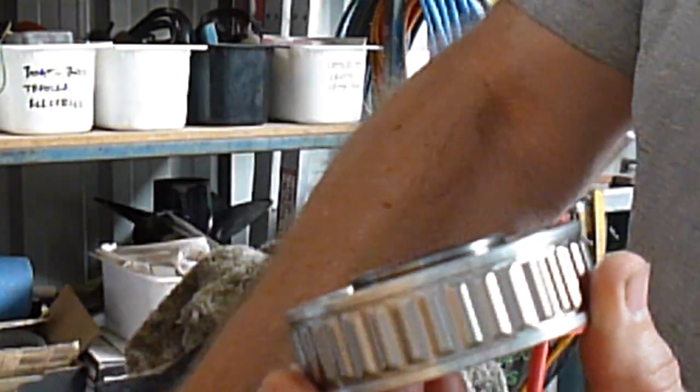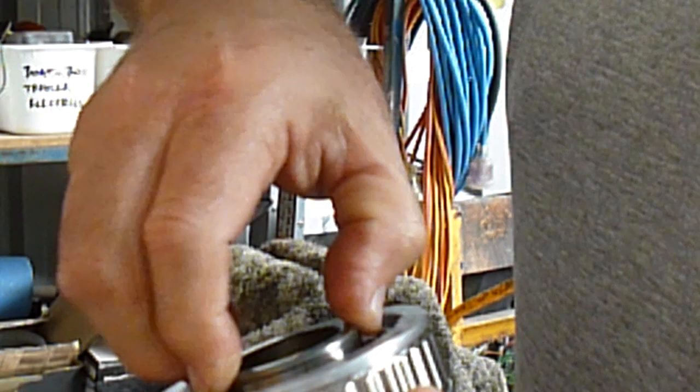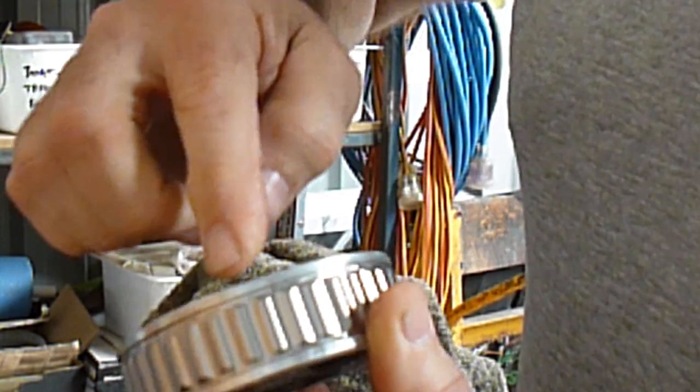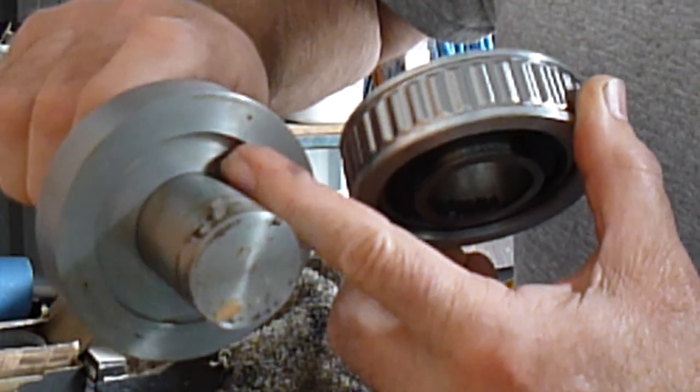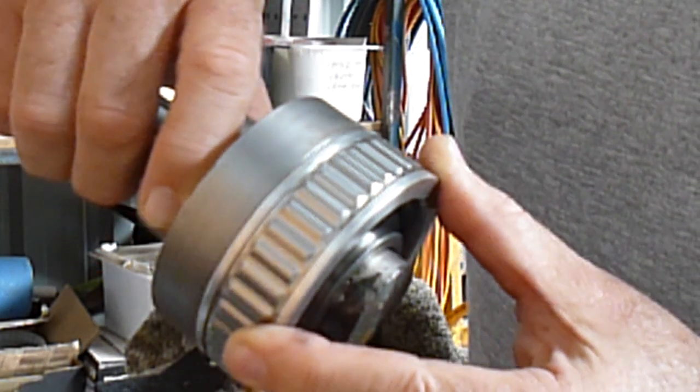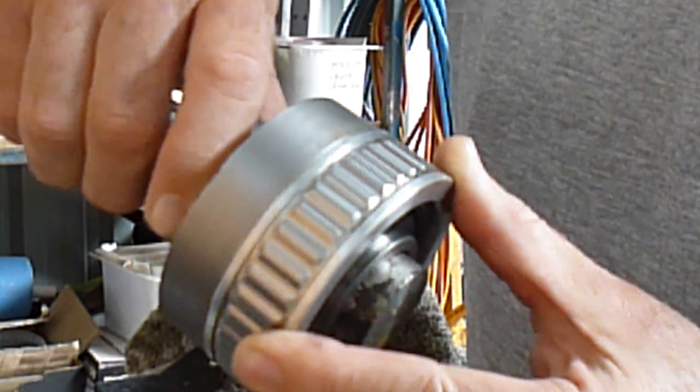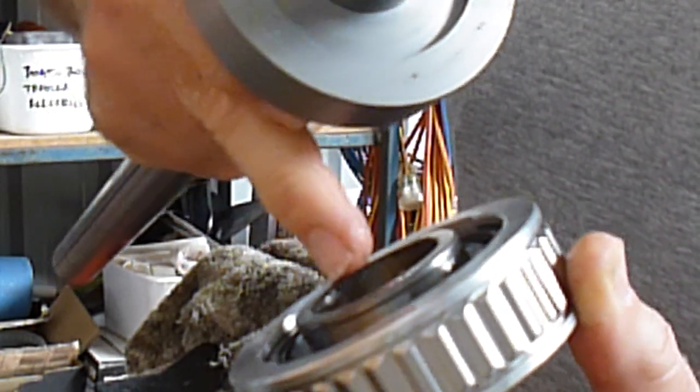You can see there that the actual bearing surface itself or the inner race is higher than the carrier. So we need an installing tool that is rebated so that when we put it in, the tool is pressing only against the carrier and not against the inner.